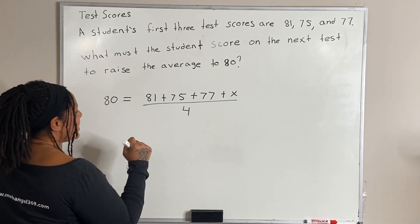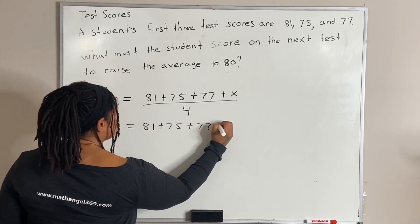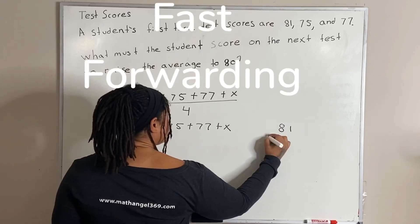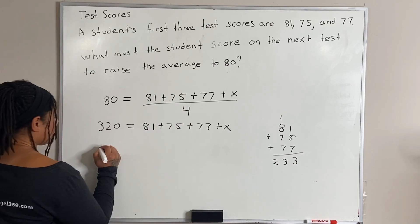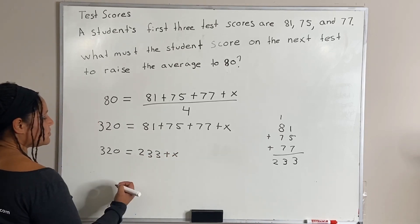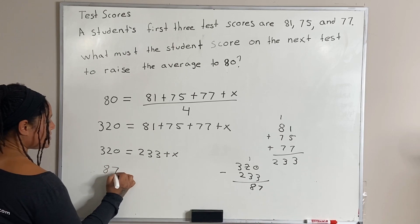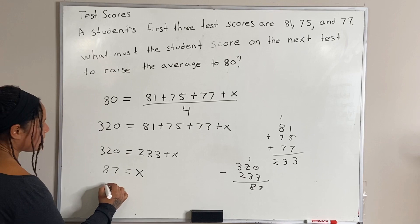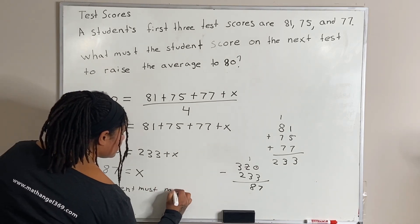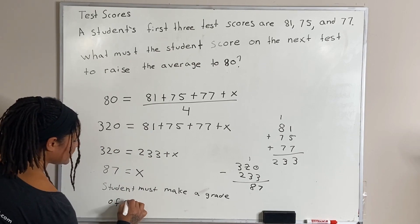So, if I multiply both sides by 4, we get 320 is equal to 81 plus 75 plus 77 plus x. And so, what we want to do is we want to add these three numbers together. So, we have 320 is equal to 233 plus x. Now, we subtract 233 from both sides. So, we get 87 is equal to x. The student must make a grade of 87.